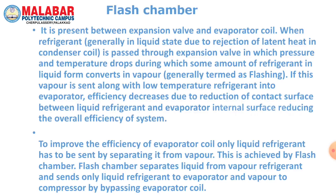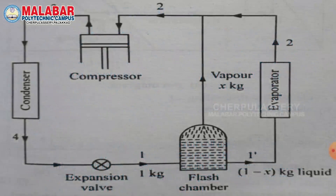This separation is achieved by the flash chamber. The flash chamber separates liquid from vapor refrigerant and sends only liquid refrigerant to the evaporator, while vapor bypasses the evaporator coil and goes directly to the compressor. The liquid refrigerant then expands, causing the temperature to drop and the refrigerant to vaporize.